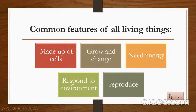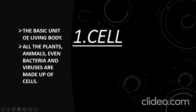Number one feature: they are made up of cells. Before going to the next slide, you must know what a cell is. The basic living unit of a living body — all the plants, animals, even bacteria and viruses are made up of cells. So all the living things are having their basic unit as cell.